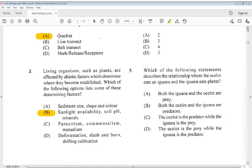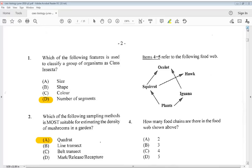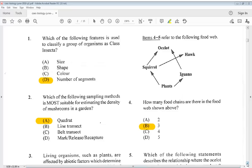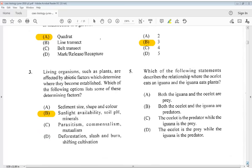Question four. Items four to five refer to the following food web. And four says, how many food chains are there in food web shown above? Looking at our food web, we can see that it is actually three. So, B, three. Five says, which of the following statements describes the relationship where the ocelot eats an iguana and the iguana eats plants? The answer for five would be C. The ocelot is a predator while the iguana is a prey.